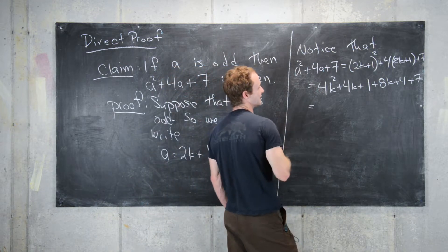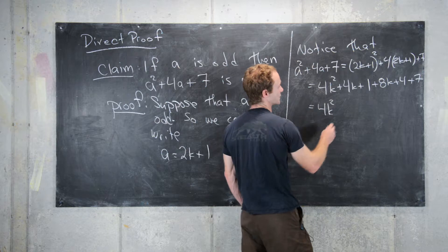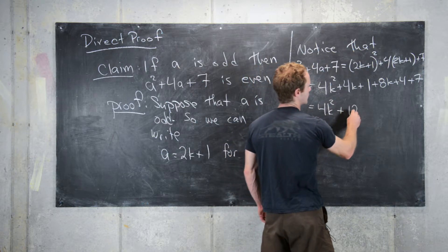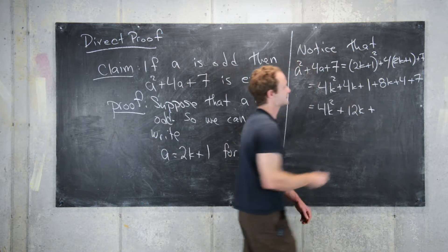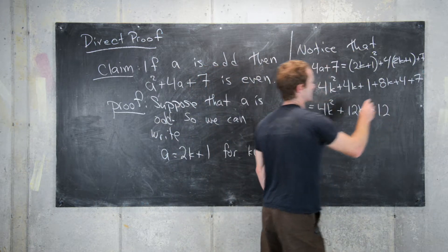Next we can combine like terms. We have 4k²+12k+12.